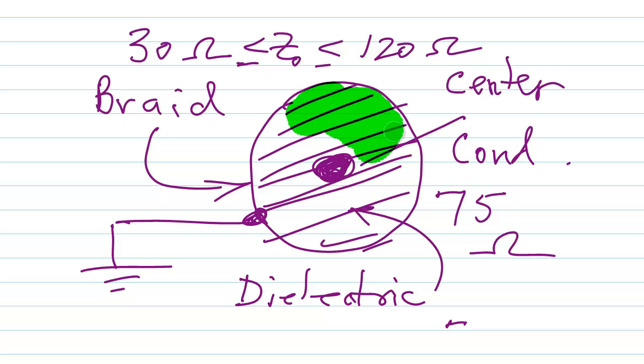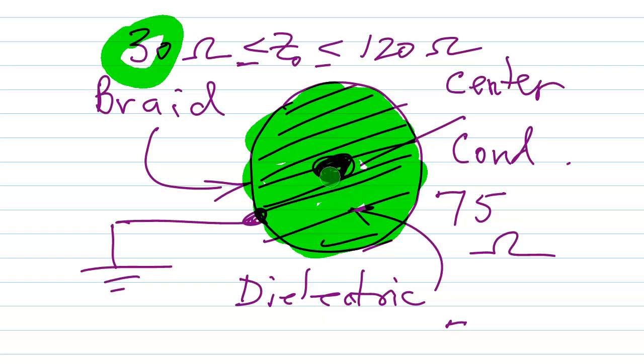Which is right in the middle, right in the ballpark of where it's pretty easy to make a cable like that. If you want to try to make something less than 30 ohms, you've got to make the center conductor so big in respect to the braid that they're almost touching. And in fact, you probably will have to make them come into contact. You probably just can't do it in practice. It's just not practical.